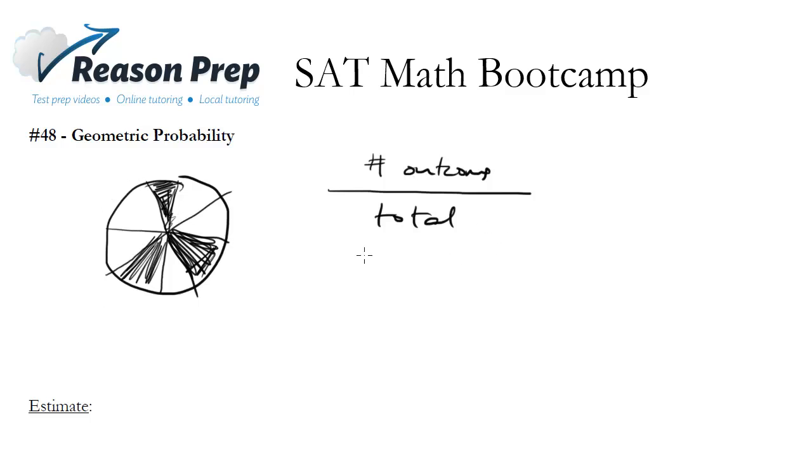So what would it look like here? Well, for geometry, for shaded geometry problems, it's basically the area of the shaded regions over the total area. That's what corresponds to this probability equation.